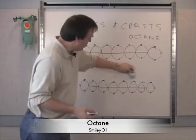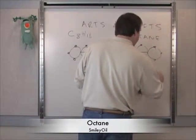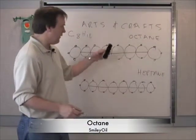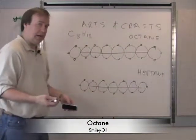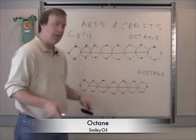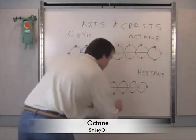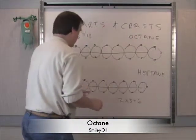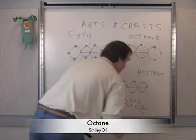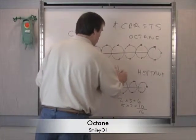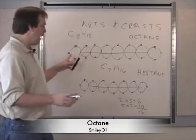Now we're going to introduce a very close cousin of octane called heptane. Heptane means seven instead of eight, so we lop one bead off and now we have a chain of seven beads. Let's figure out its molecular formula: two outer beads times three sequins equals six, plus five inner beads with two sequins each equals ten, for a total of sixteen. So heptane is C7H16. Remember, anything ending in "-ane" has one string through it.